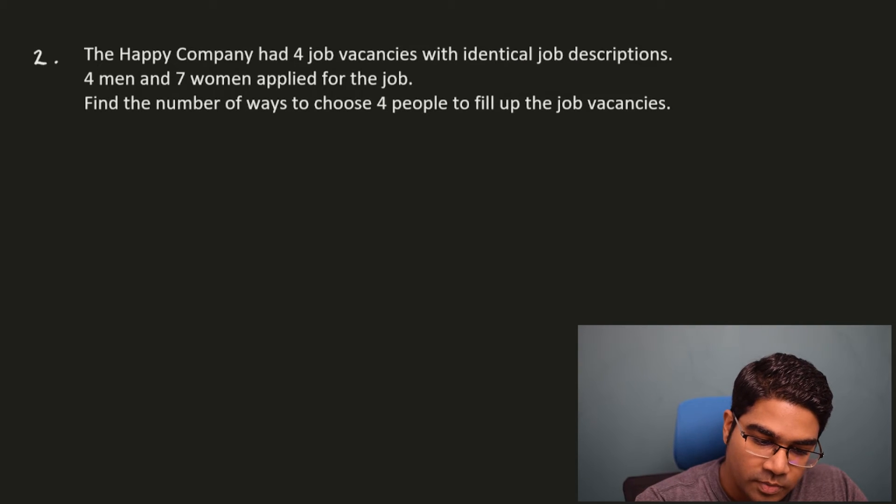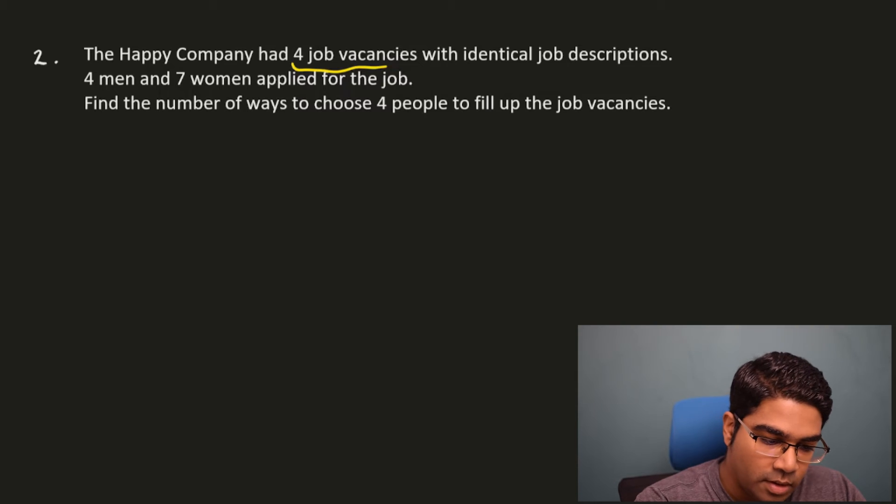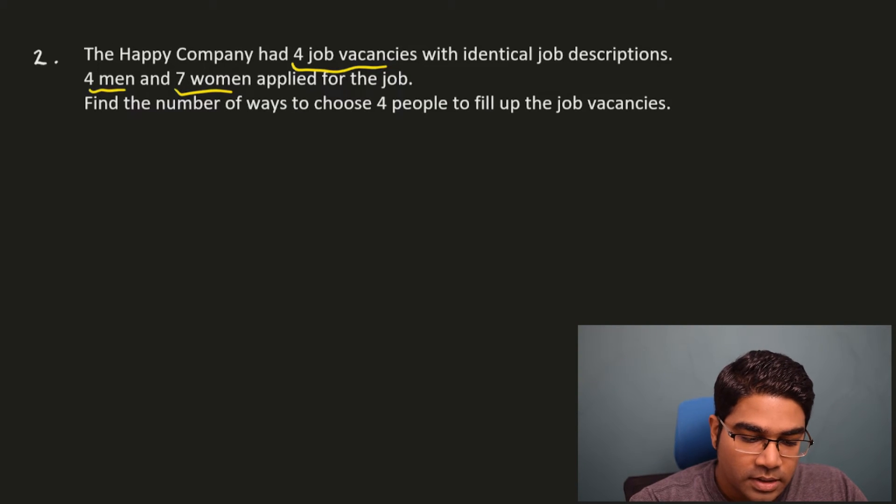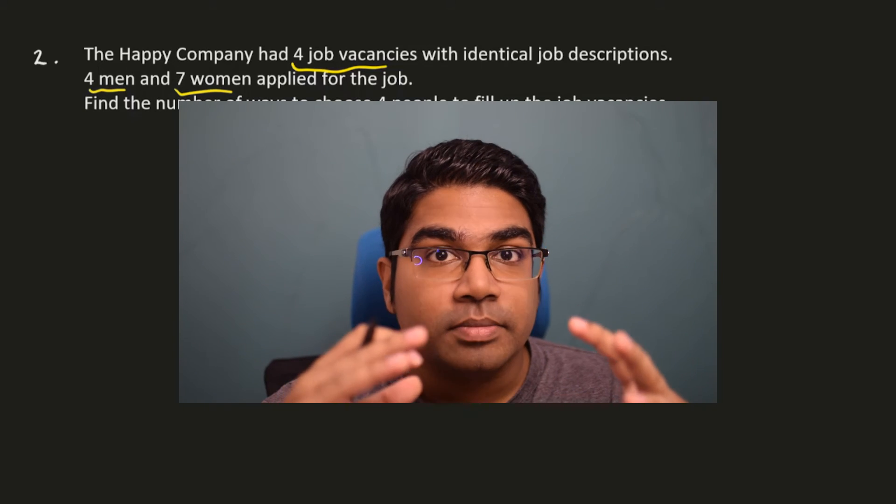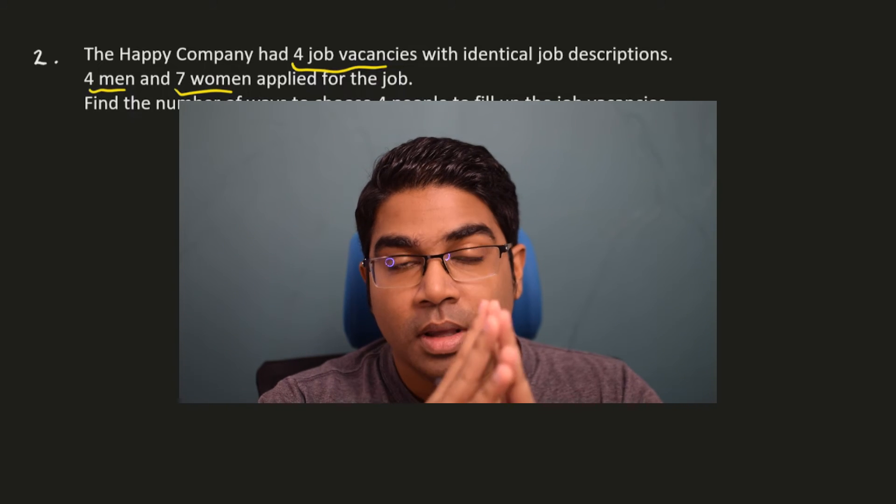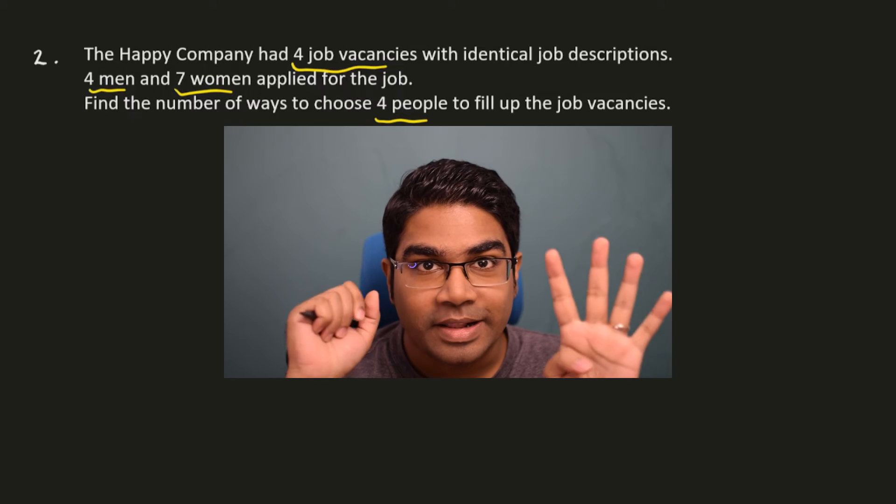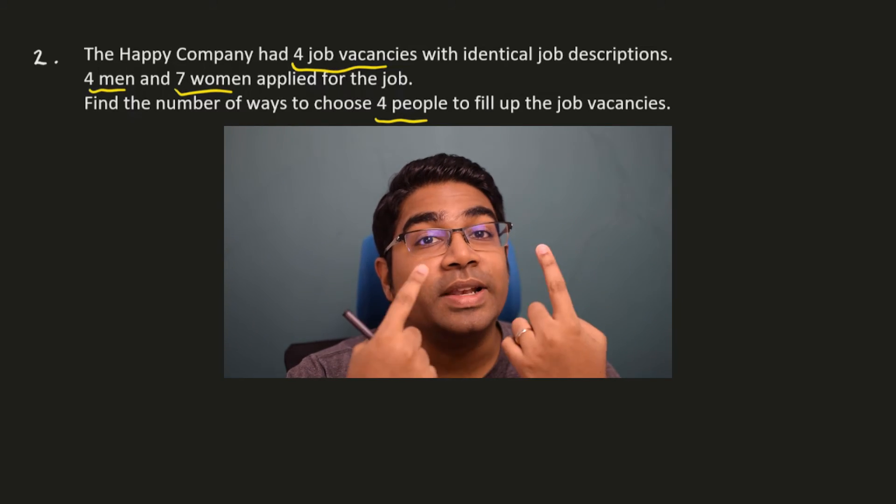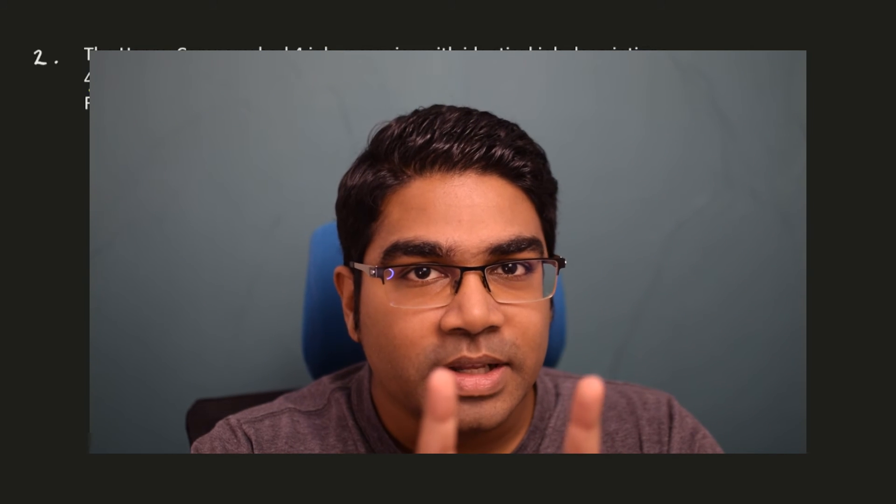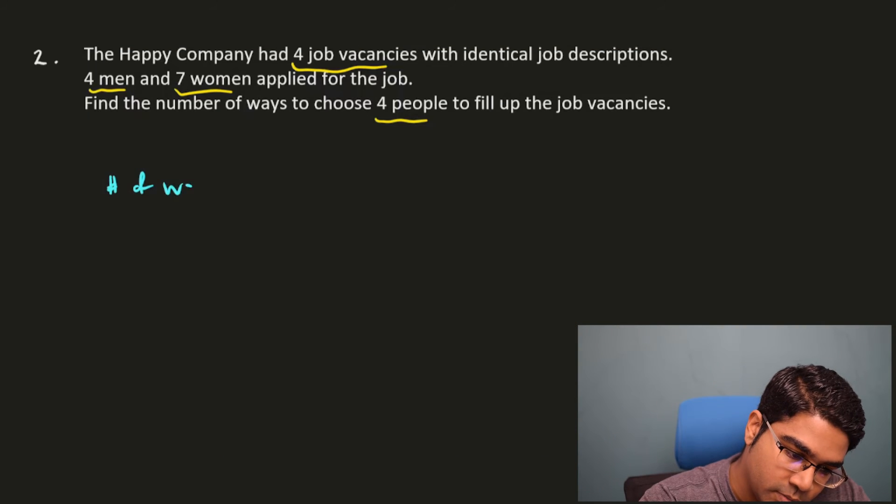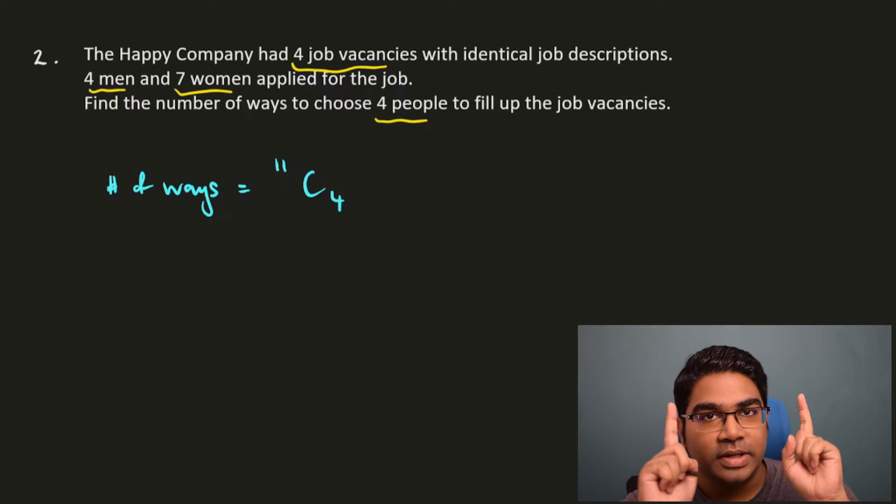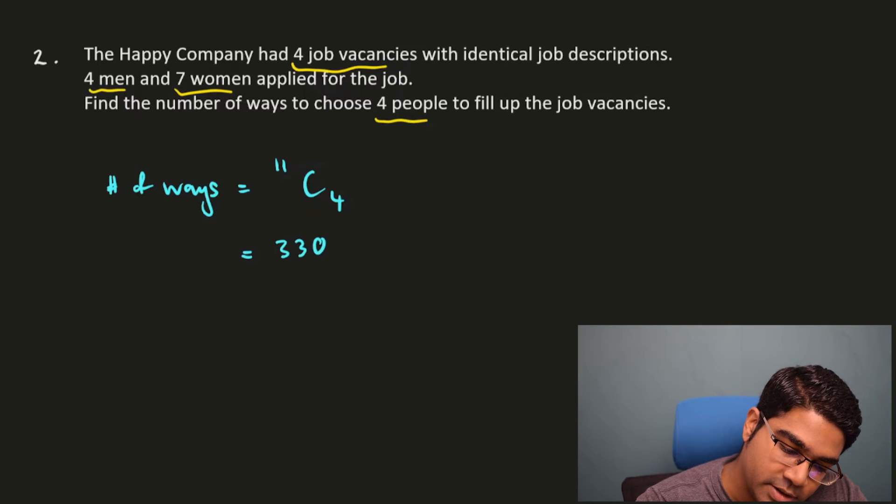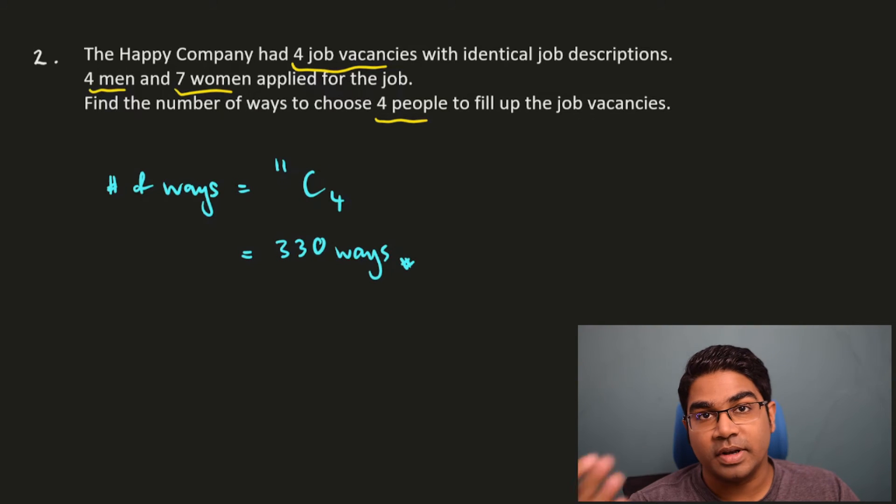Let's look at number two. The happy company had four job vacancies with identical job descriptions. Four men and seven women applied for the job. Find the number of ways to choose four people who fill up the job vacancies. Here the question is designed to cause confusion. If you think about it, there are four job vacancies and four people need to fill the job. So the question is actually very simple. There are four men and seven women who applied for the job, which means there is actually a total of eleven people. Out of the eleven people, you need to choose four people. There is no criteria here. So actually the number of ways is very simple. Number of ways will be equals to 11C4. We are choosing four people out of eleven people. And that would be equals to three hundred and thirty ways.